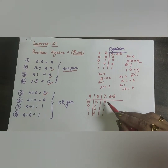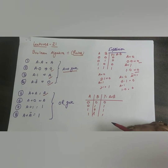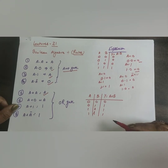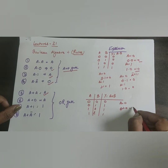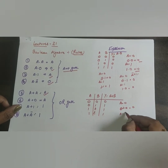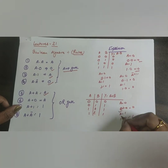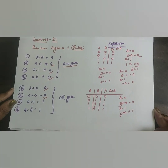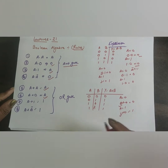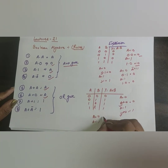For A+0: if A=0, 0+0=0; if A=1, 1+0=1. The output depends upon A, so A+0 = A. For A+1: if A=0, 0+1=1; if A=1, 1+1=1. In both conditions the answer is 1, so A+1 = 1.